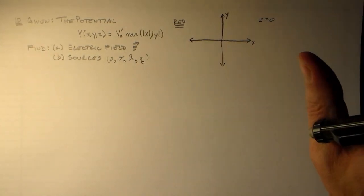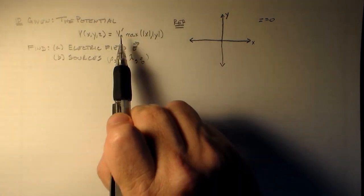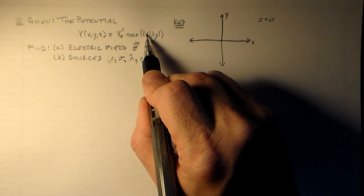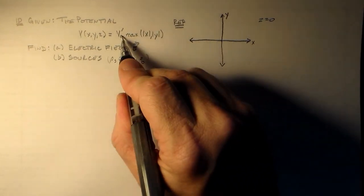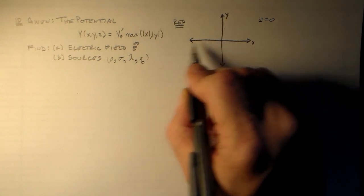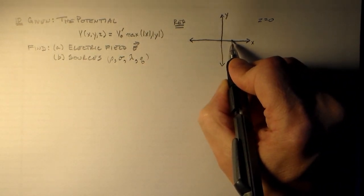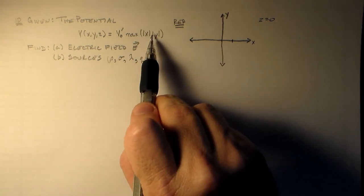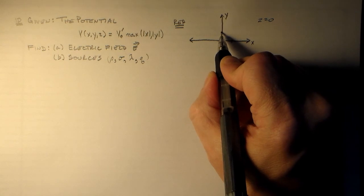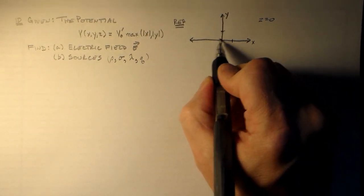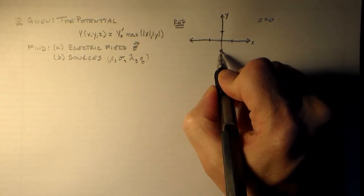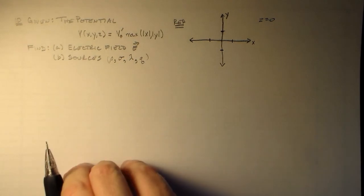We'll look at an equipotential of V₀ prime. One place where we have V₀ prime is where V₀ prime times 1 meter — so V₀ prime meters — is just where x is equal to 1 meter. Let's go out to x equals 1 meter. If x is 1 meter and y is 0, that's fine. If y is 1 meter and x is 0, that's fine. What if x is minus 1 meter? Same thing. What about y equals minus 1 meter? Same thing down on the other side. So we're starting to sketch this out, finding some points.